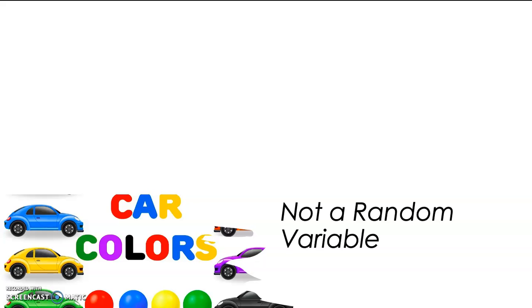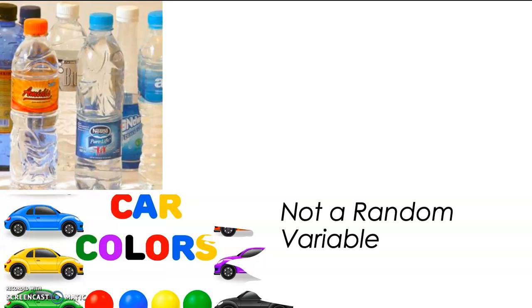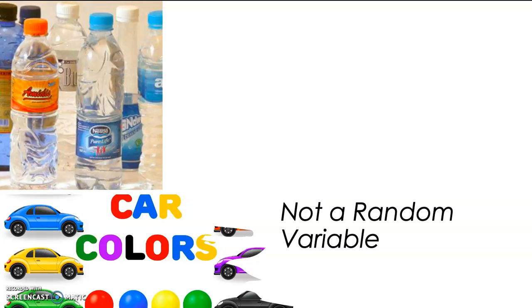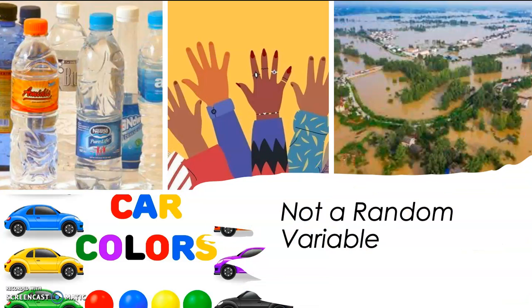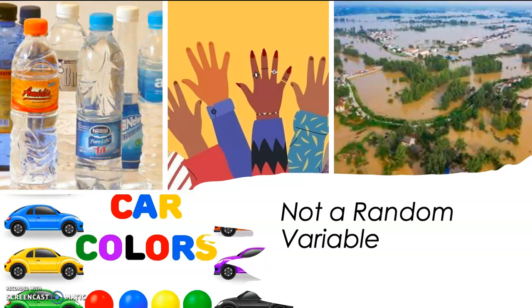Another important note that you should know is I would like to show you example that cannot be defined as a random variable. The first one is the colors of a car, the brands of mineral water in the market, ethnicity, and the name of a city having flood throughout the year of 2019. These are examples that cannot be defined as a random variable.